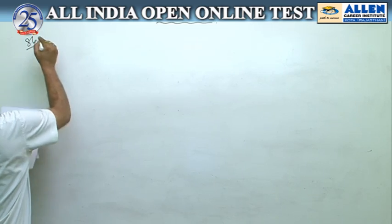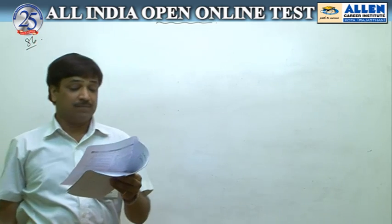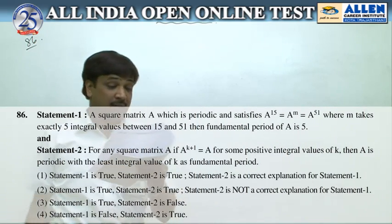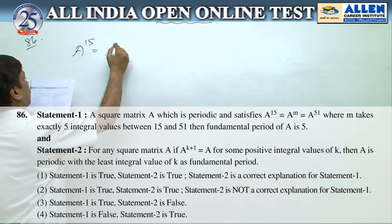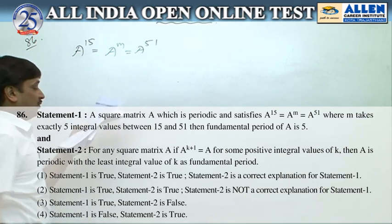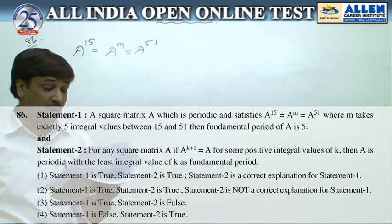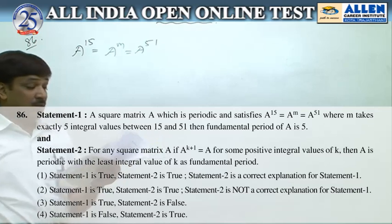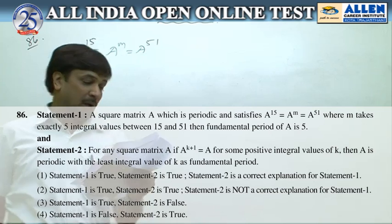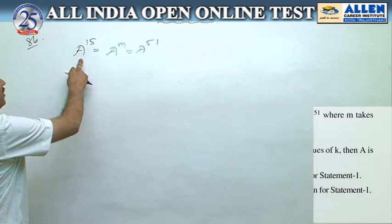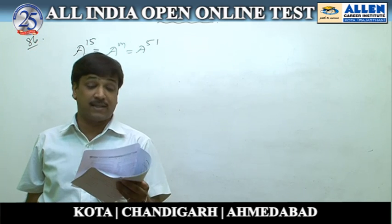In question number 86, statement 1 is given: a square matrix A which is periodic satisfies this equation, where m takes exactly 5 integral values between 15 and 51. In statement 1, it is given that the fundamental period of A is 5. Now, A raised to power 51 is equal to A raised to power 51, and m takes exactly 5 integral values between 15 and 51.